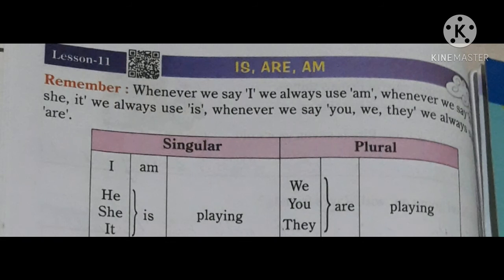Whenever we say 'I', we always use 'am'. Whenever we say 'he', 'she', 'it', we always use 'is'. Whenever we say 'you', 'we', 'they', we always use 'are'.